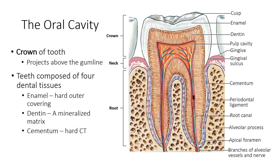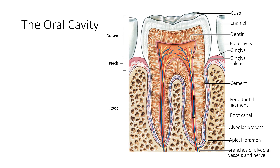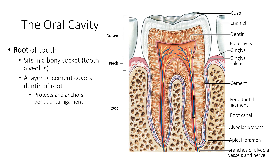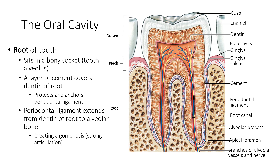Cementum is the hard connective tissue which covers the tooth root, giving attachment to the periodontal ligament. The pulp is the soft tissue containing nerves, blood vessels and connective tissue. The root of the tooth sits in a bony socket known as the tooth alveolus. A layer of cementum covers the dentin of the root, protecting and anchoring the periodontal ligament. The periodontal ligament extends from the dentin of the root to the alveolar bone, creating a gomphosis — a strong articulation.